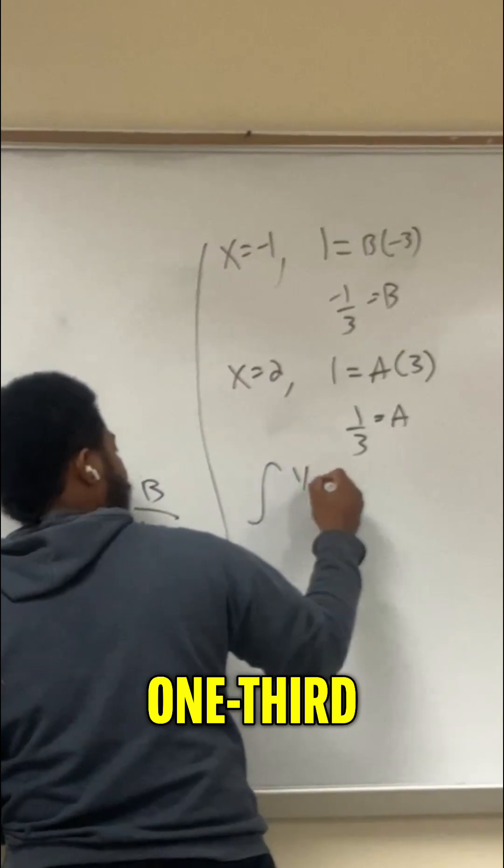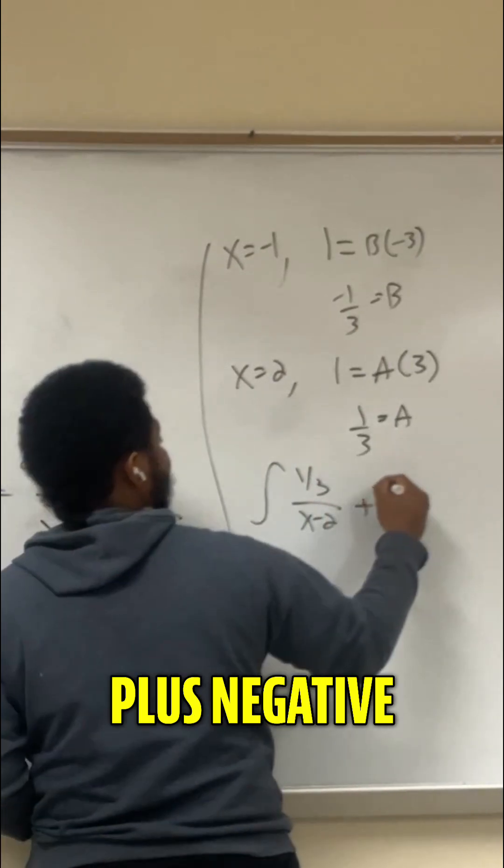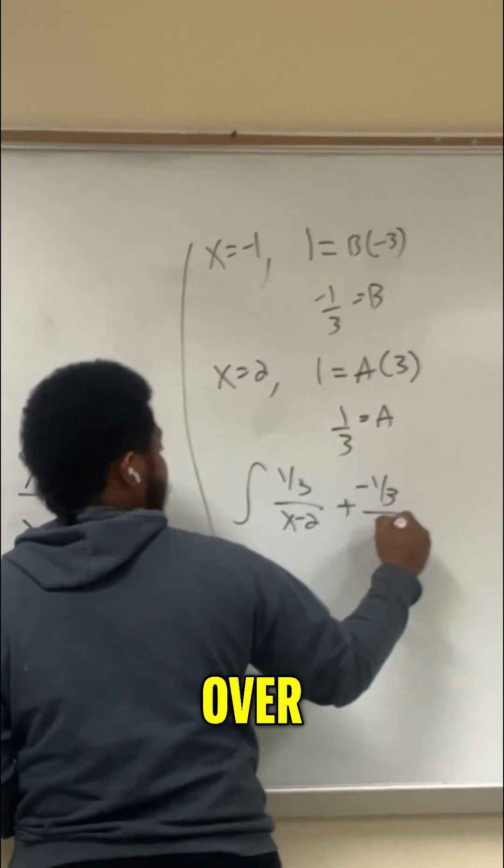So now my integral becomes 1 third over x minus 2 plus negative 1 third over x plus 1 dx.